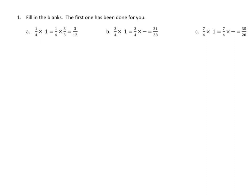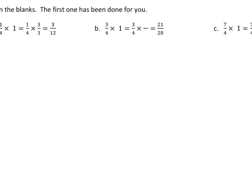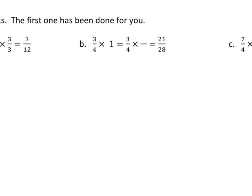Now they want us to do an example on our own. So we're going to zoom in here a little bit and go through the process. We have 3 fourths times 1 — we know that's still 3 fourths. We have to multiply 3 fourths by something equivalent to 1, where the numerator and denominator are the same, and get 21 twenty-eighths. What do I have to multiply 4 by to get 28? Likewise, what do I multiply 3 by to get 21? The answer in both cases is 7. So we write 7 sevenths, which is equivalent to 1, and we get 21 twenty-eighths.